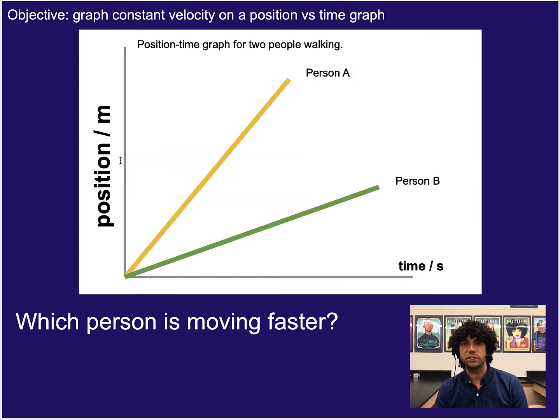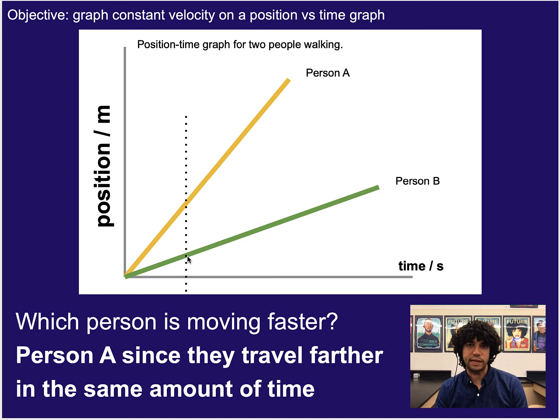So then my next question is, what does this graph tell us? In other words, which person's moving faster, person A or person B? So hopefully you took a look at this and you said, okay, well, for the same amount of time, from zero to, let's say, right here, person B went this far, but person A went this far. So person A is traveling further, or has a bigger change in position, than person B in the same amount of time. Well, change in position is displacement, and so really what that means is we get person A is moving faster than person B.